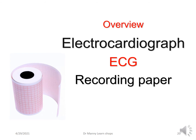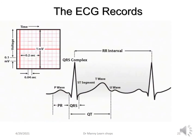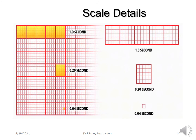So now let's look at the ECG recording paper. The ECG recording paper records two things: time along the horizontal axis and voltage on the vertical axis — time in seconds or milliseconds, voltage in millivolts, but we tend to use millimetres in relation to size. One big square has 25 small squares. On the horizontal axis, it equals 0.2 seconds or 200 milliseconds. On the vertical axis, it equals 5 millimetres. A small square on the horizontal axis equals 0.04 seconds or 40 milliseconds; on the vertical axis, 1 millimetre or 0.1 of a millivolt.